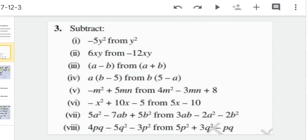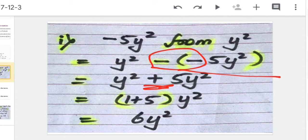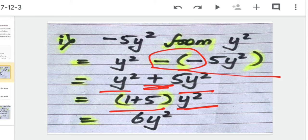The first part is y² minus (minus 5y²). The minus minus becomes positive. Now we have two like terms, so we take the algebraic factor common: (1 + 5)y², and the answer is 6y².